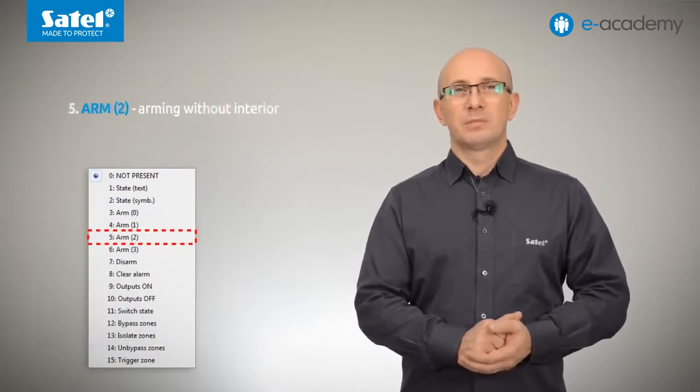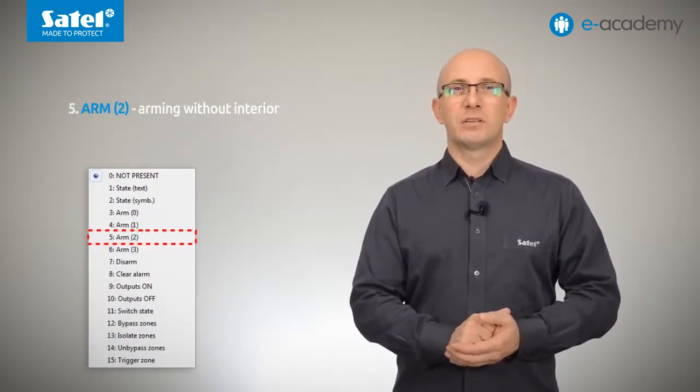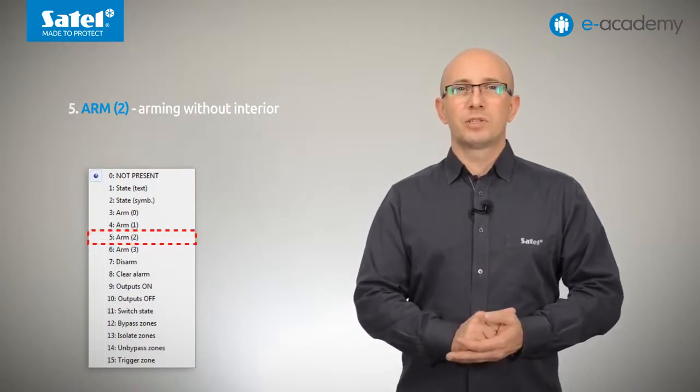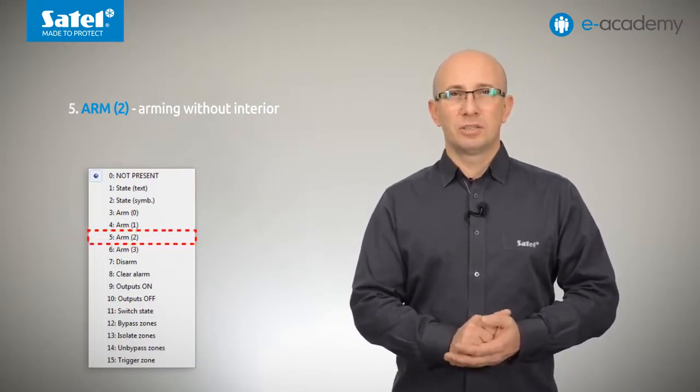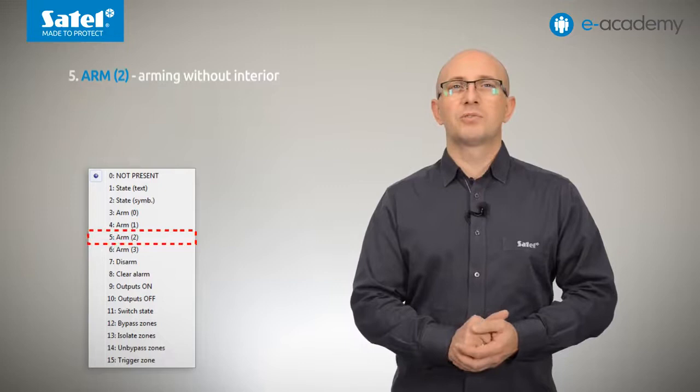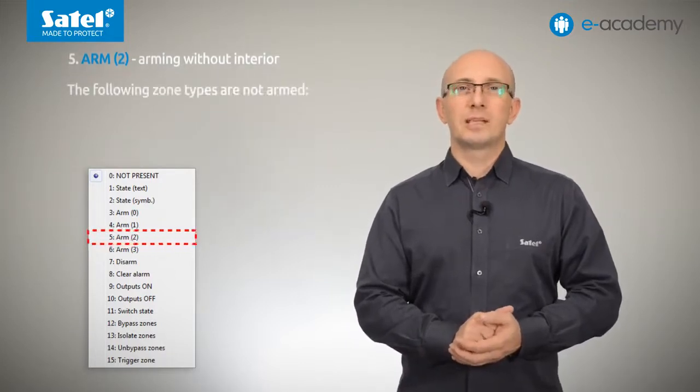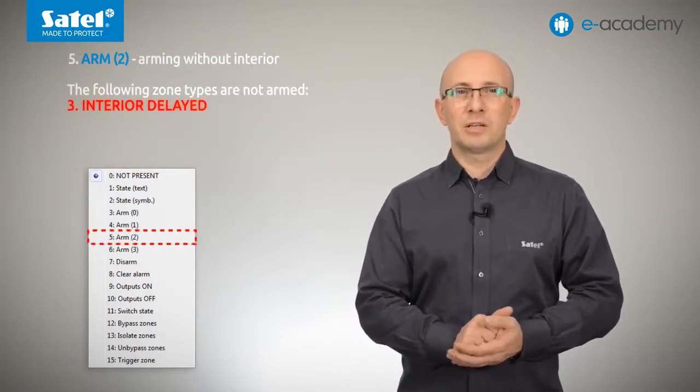Item five is the third type of arming, that is, arm 2. It means arming without interior detectors. In this case, all detectors will be armed except for those programmed as type 3 interior delayed,